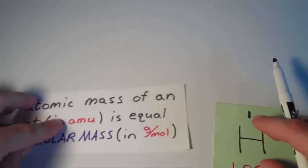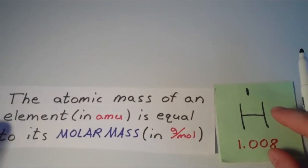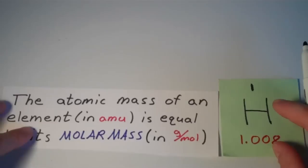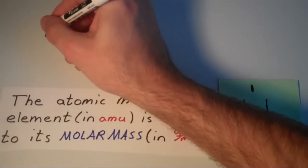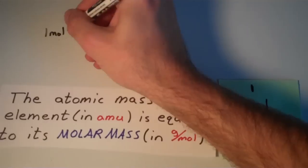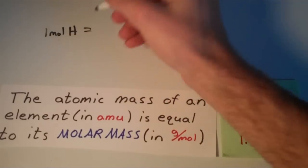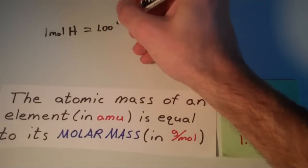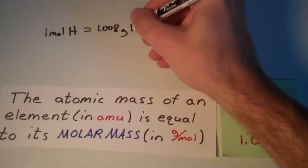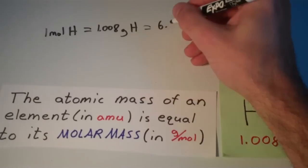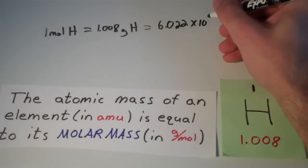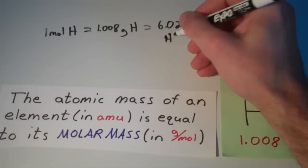So that means I can express these quantities as follows. I can say that one mole of hydrogen is equal to 1.008 grams of hydrogen, which is also equal to 6.022 times 10 to the 23rd hydrogen atoms.